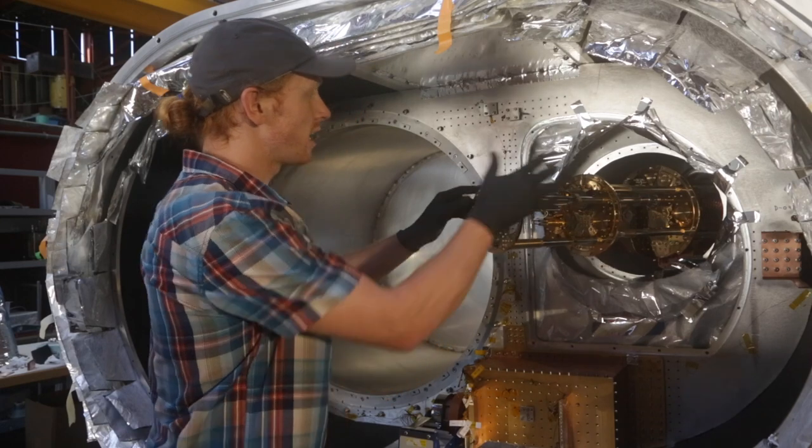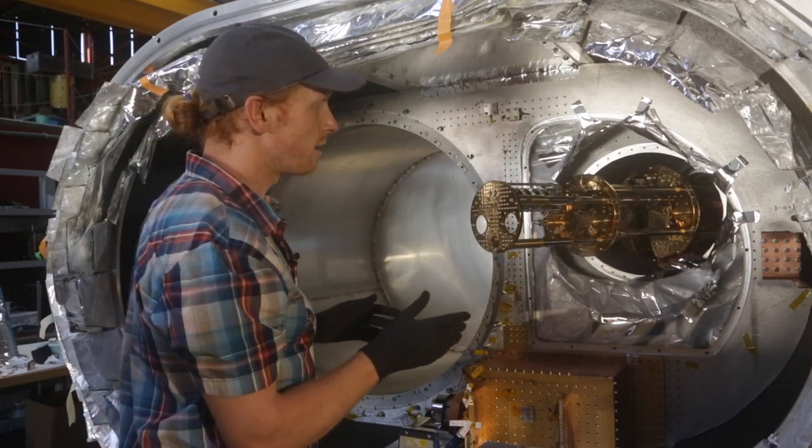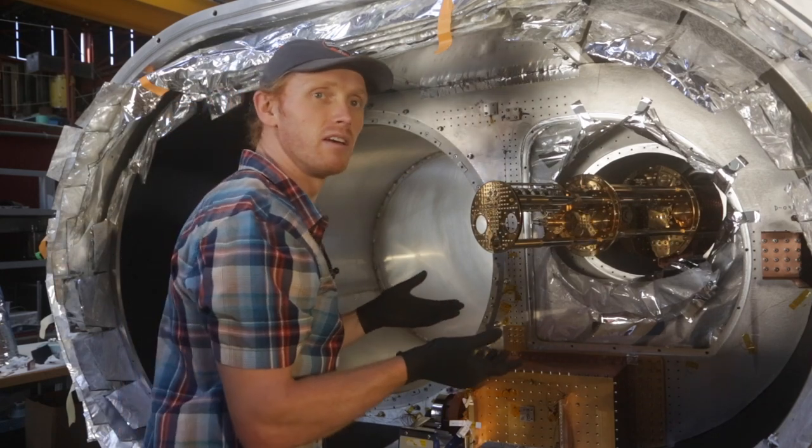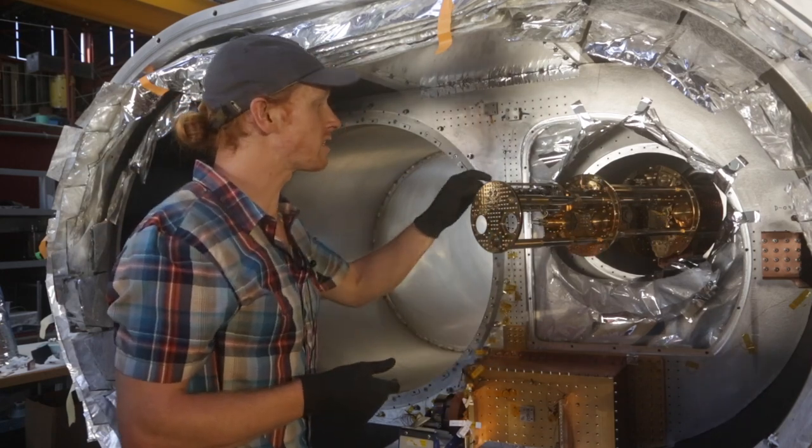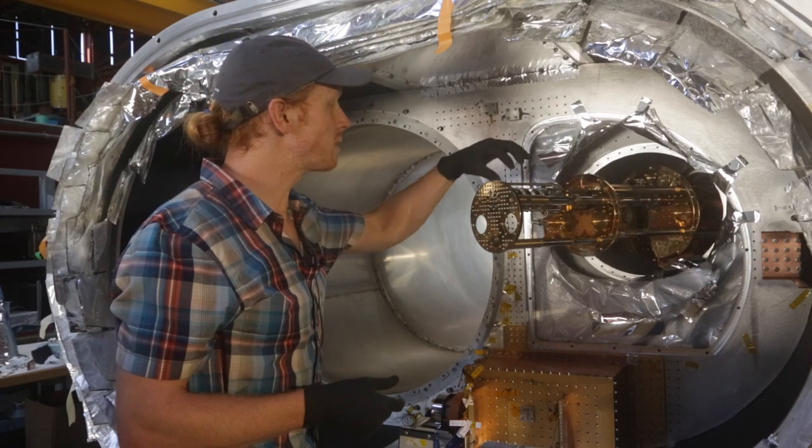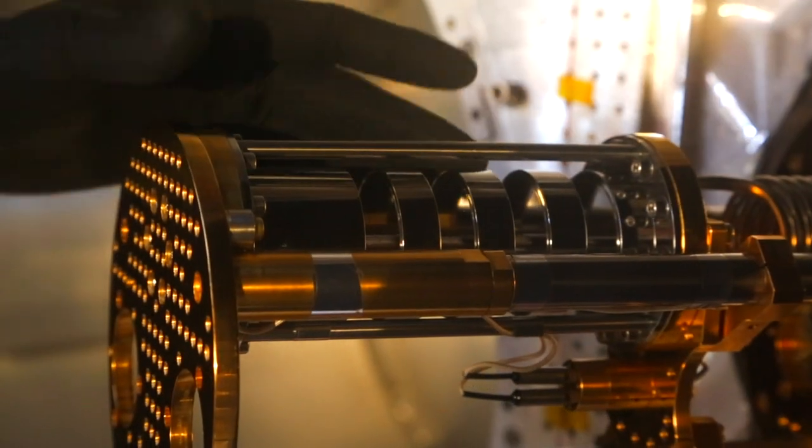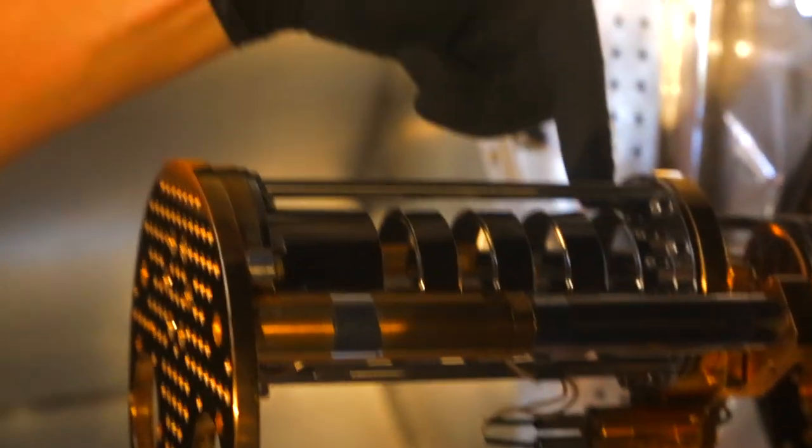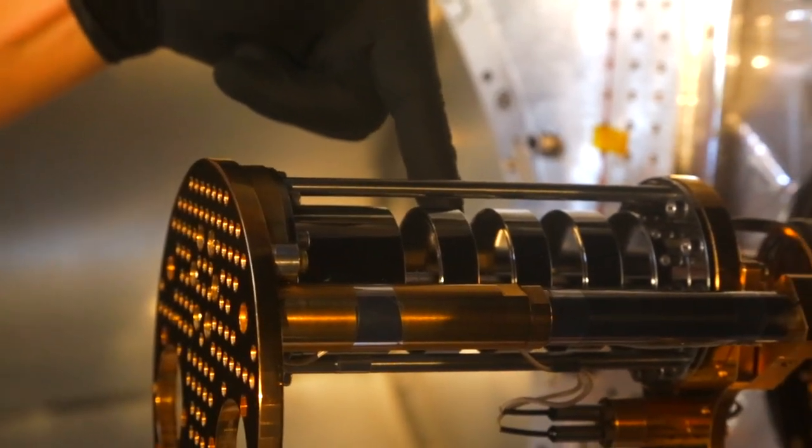Looking at this particular device, it's actually relatively simple once you understand the basic properties of it. But the real business end is this piece right here, which is called the mixing chamber. This is where the two isotopes of helium that work in a dilution refrigerator mix.